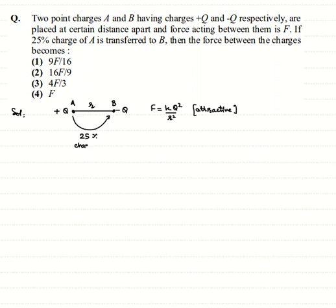25% charge transferred. So after this, what will happen? If 25% charge is transferred here, 75% of the charge would be remaining. That means 3Q/4 is the charge which is remaining at A.